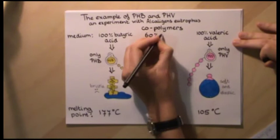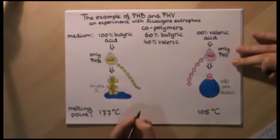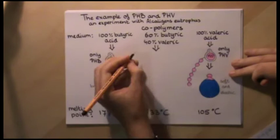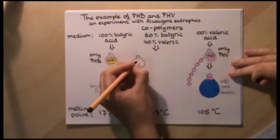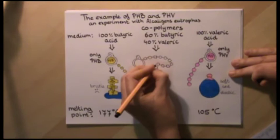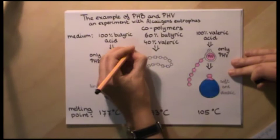But it gets even more interesting. Bacteria are also able to make co-polymers. Alcaligenes eutrophus was also grown on substrates with both butyric and valeric acid — for instance, 60% butyric and 40% valeric acid. The formed PHA had a melting point of 133 degrees Celsius.